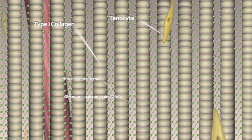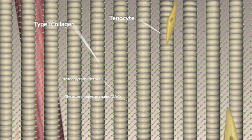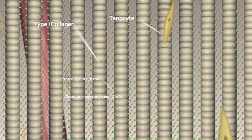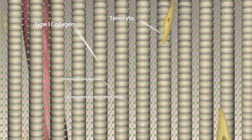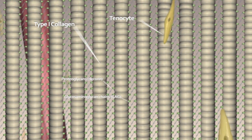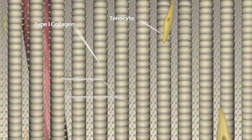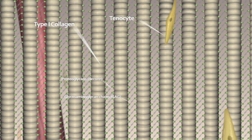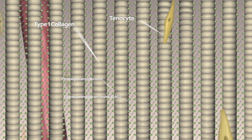In between the collagen fibrils you can see the small green dots which represent the proteoglycans known as decorin. The extensions of the decorin are the glycosaminoglycan chains, or GAG chains, which maintain the viscoelasticity of the tendon.